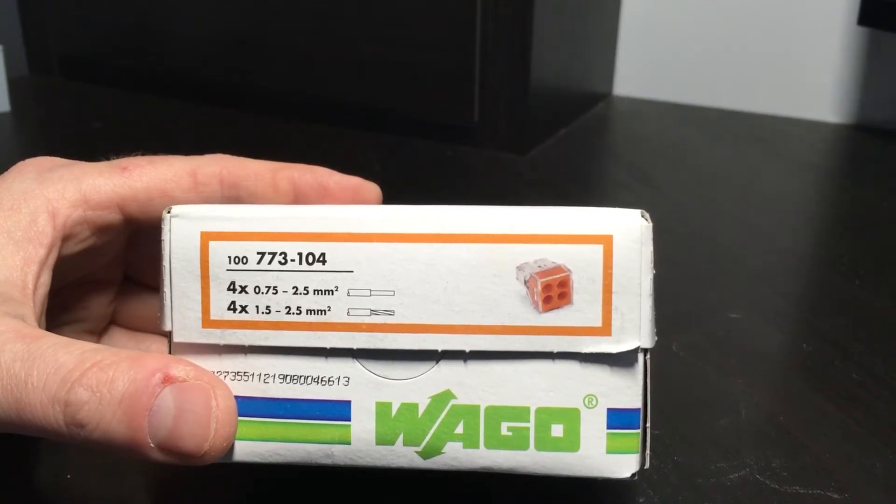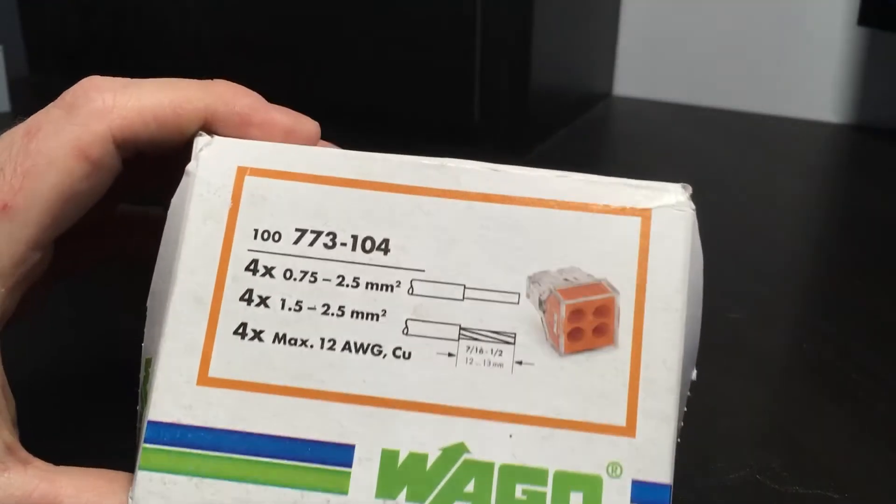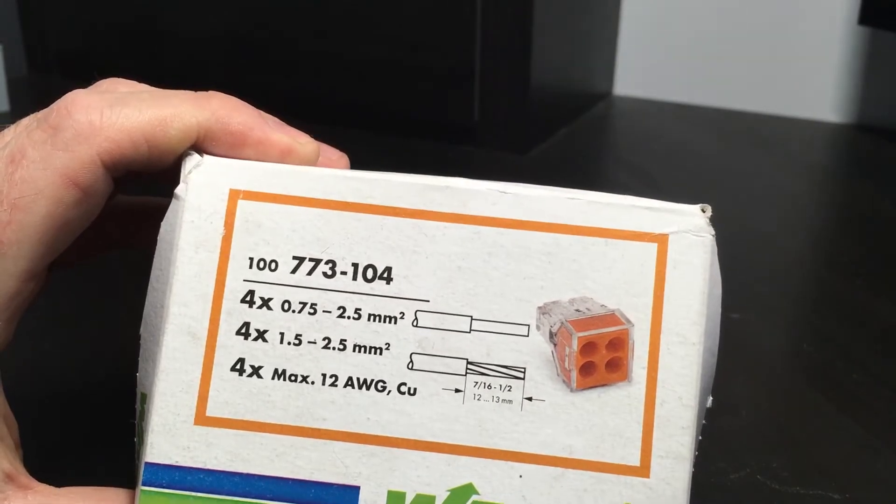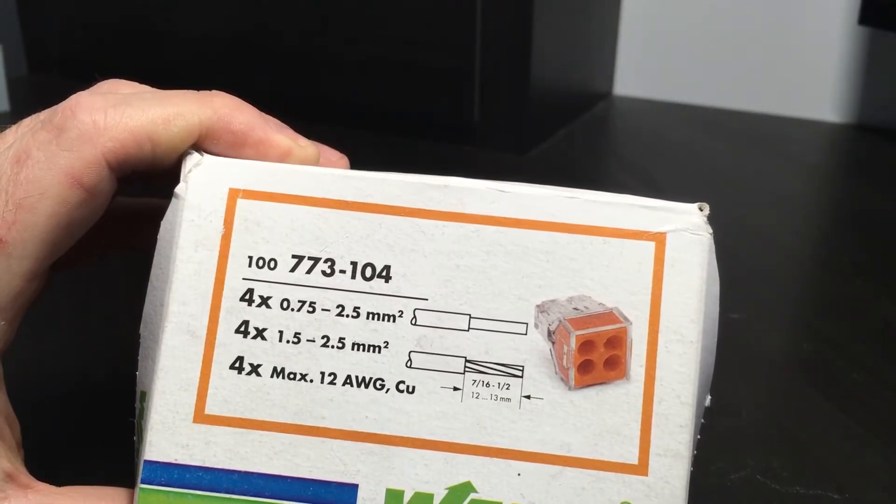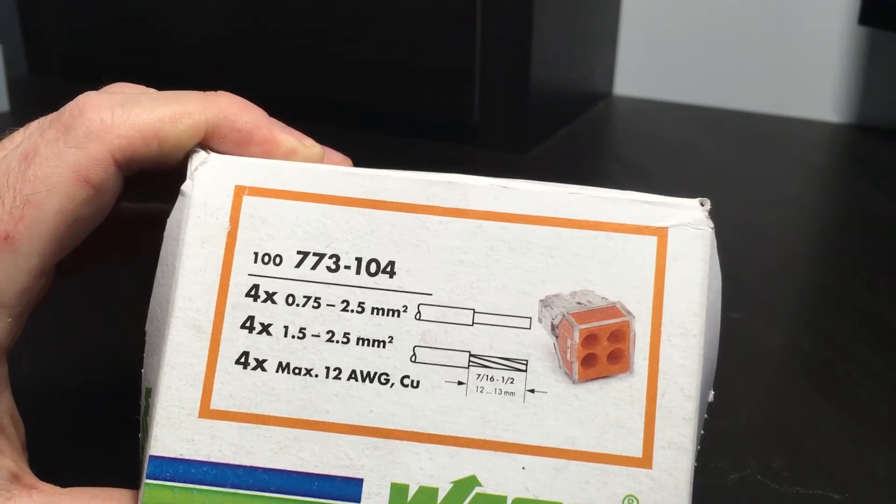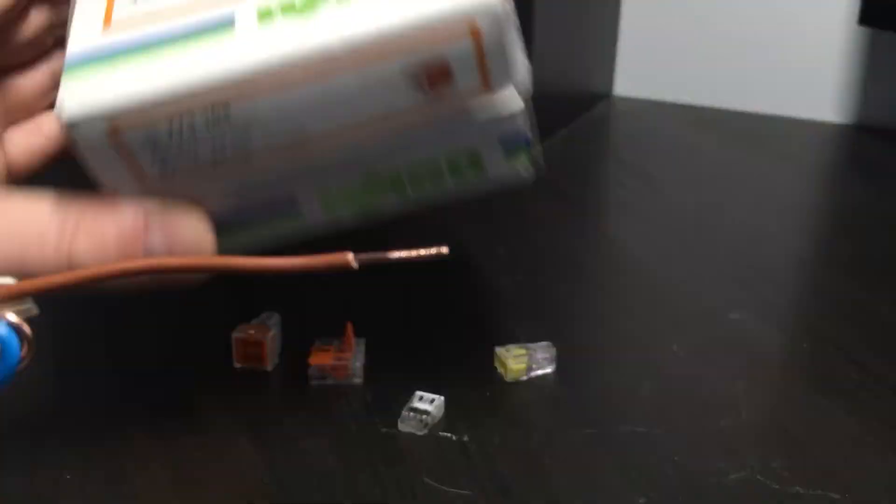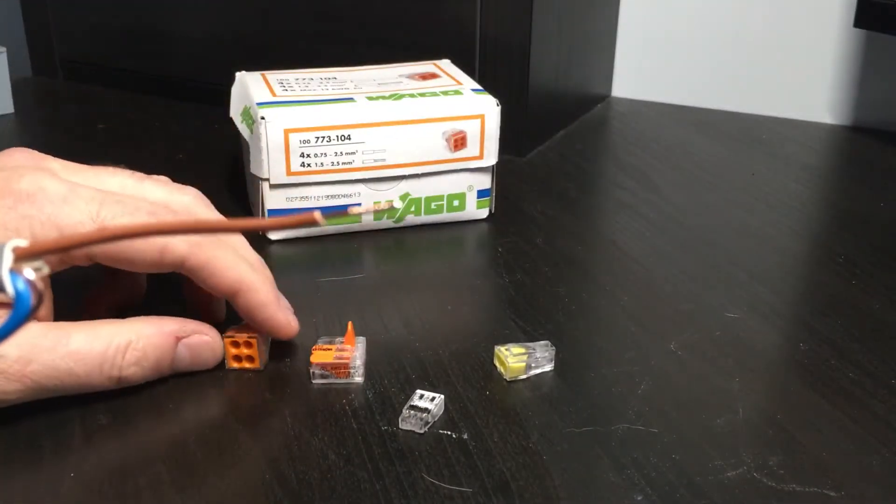So it's ideal really for lighting circuits and small radial circuits up to around 20 amps that will deal with it quite well. As you can see there, it's recommended that you strip your cable back between 12 and 13 millimeters, which is what we've done here. I'm just going to show you a very quick demonstration of how these things work. Quite simply, you strip your cable.